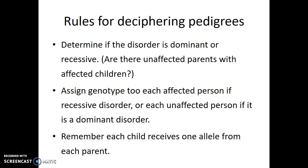In order to correctly interpret pedigrees, first we need to ask a few questions about the trait we're studying. Are we able to determine if it's a dominant or a recessive trait? One of the easiest ways to check for this is to ask if there are any unaffected parents who have an affected child. If that's the case, likely it's a recessive disorder and we're dealing with two parents who are carriers. Once we know whether the trait is dominant or recessive, we can assign genotypes to affected individuals in recessive disorders, or unaffected individuals in dominant disorders, because those individuals will always be homozygous recessive.